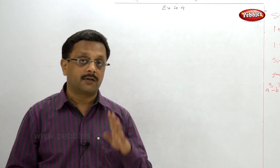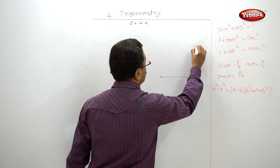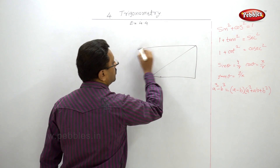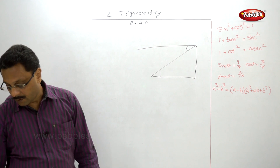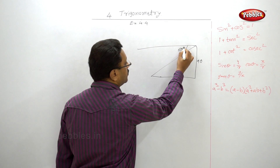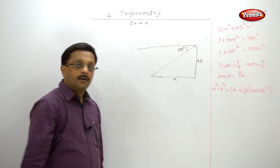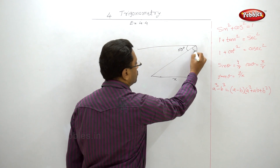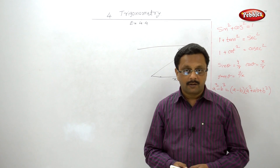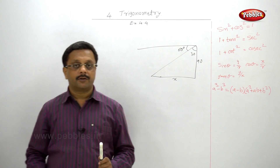Find how far the ship is from the lighthouse; root 3 is 1.73. This example was in the March 2014 exam for 4 marks. Please pause your video and draw the figure first. This is the horizontal, this is the lighthouse, from the top he observed the ship. Angle of depression is 60 degrees, height is 90 meters. If this angle is 60, the alternate angle is 30, so tan 30 = x/90. Tan 30 is 1/√3, so find the value of x.